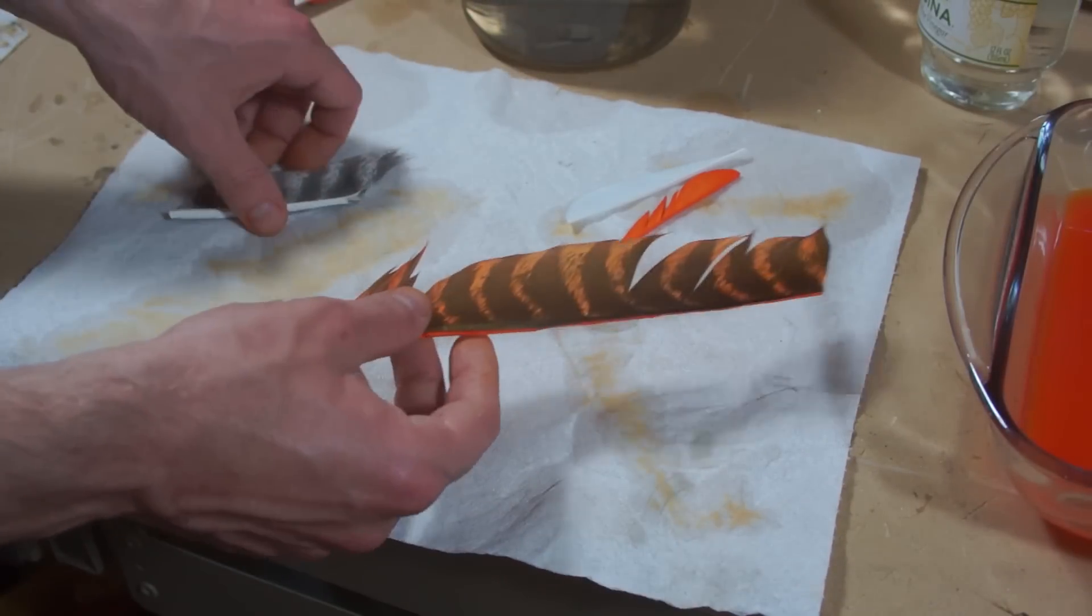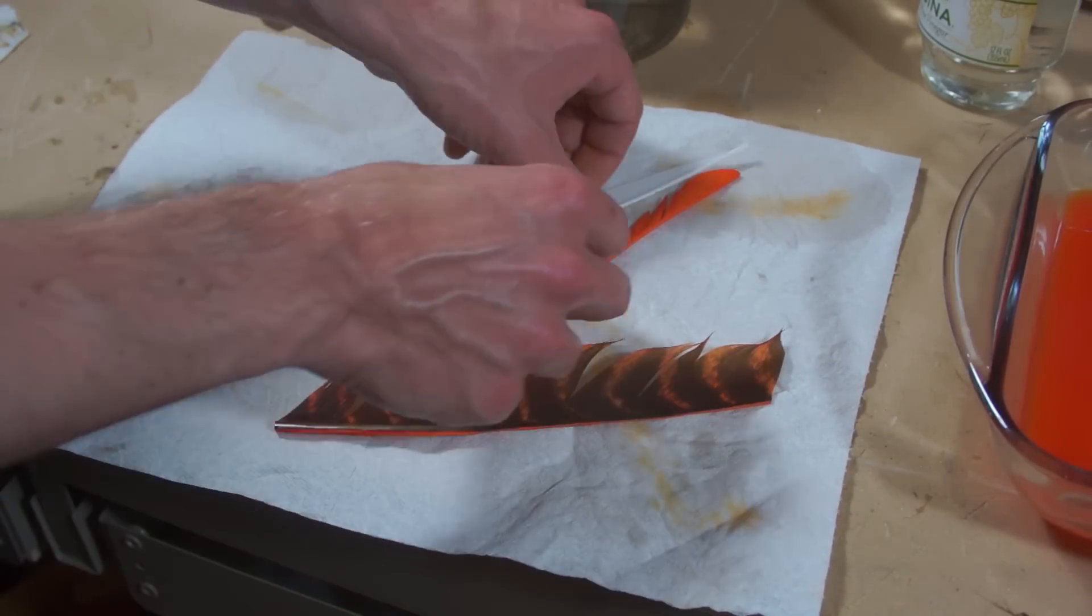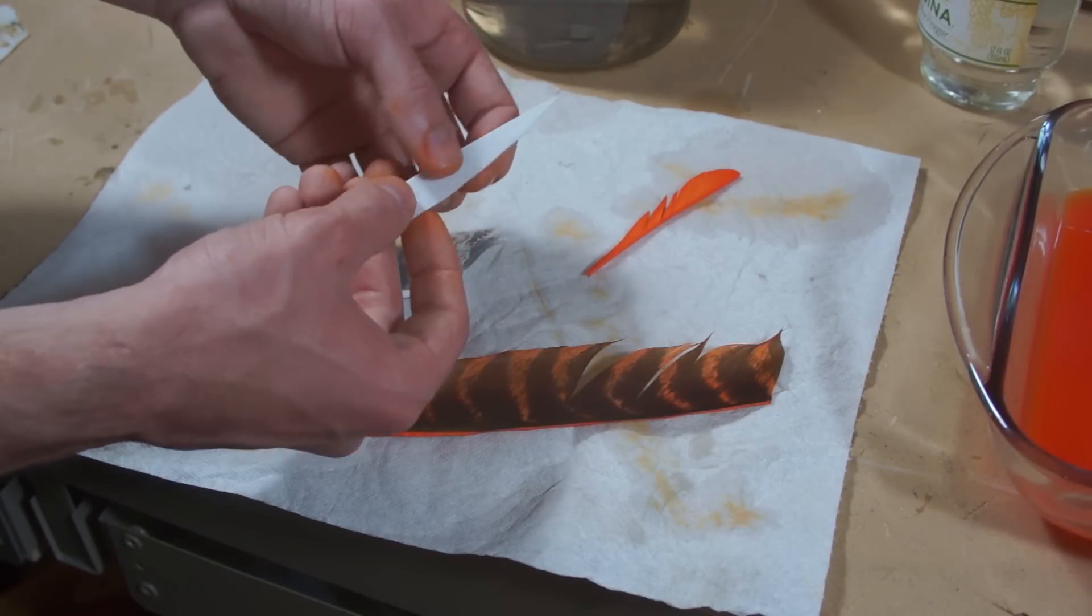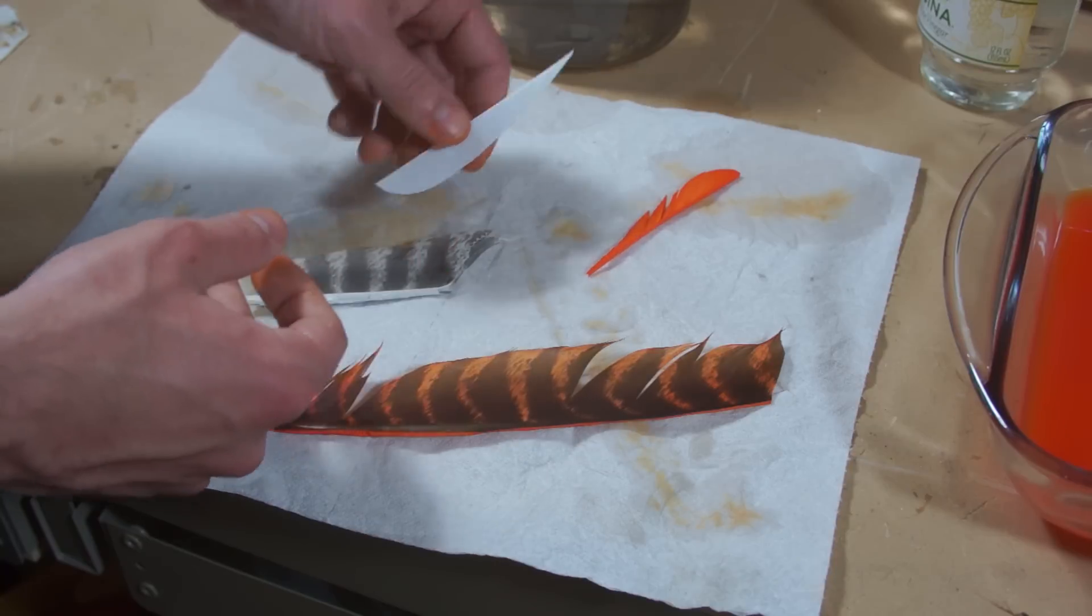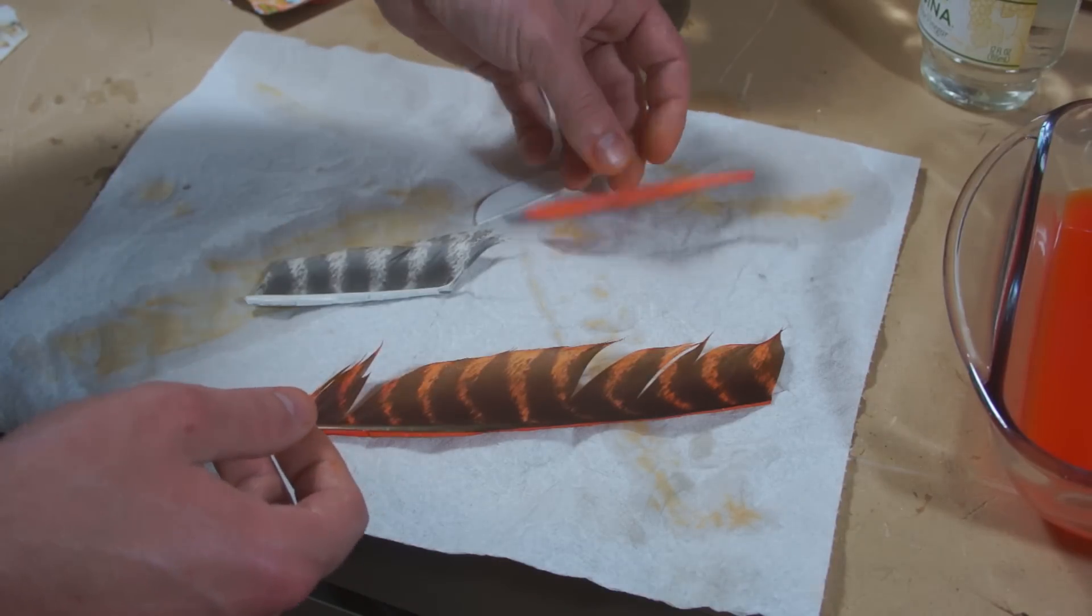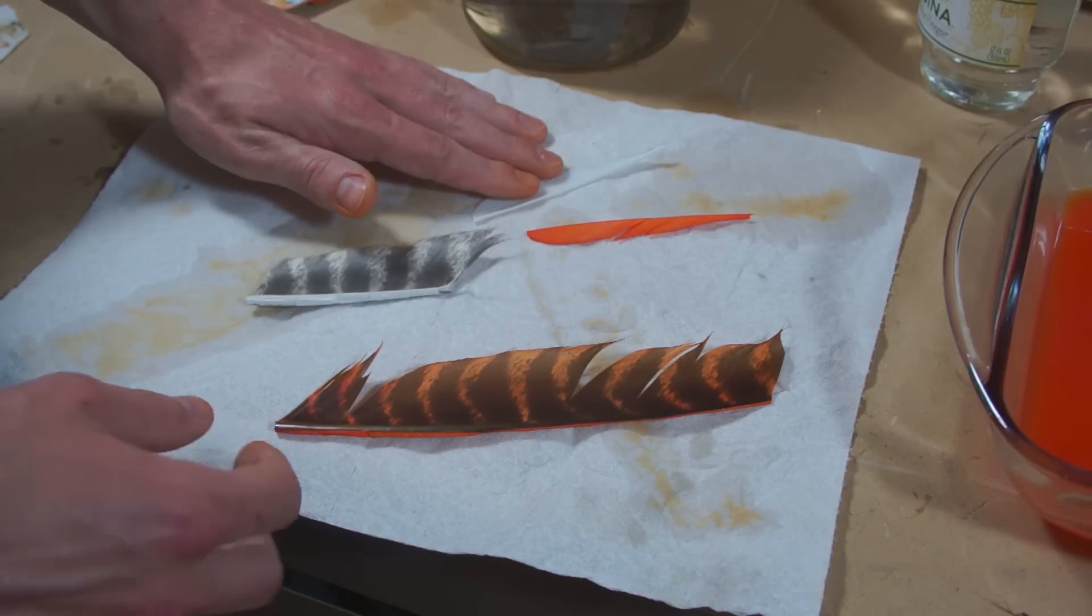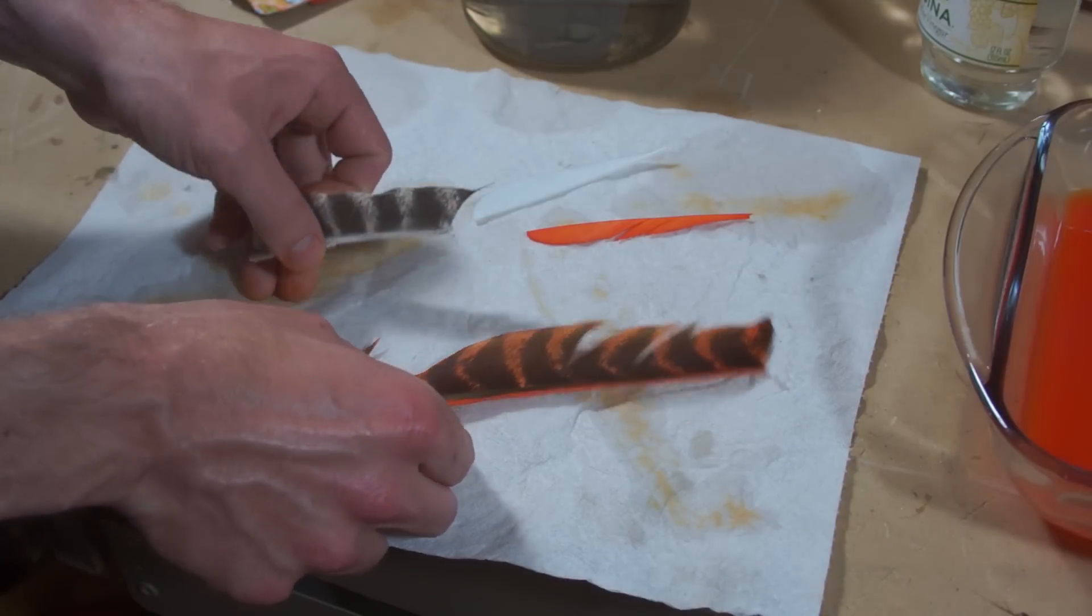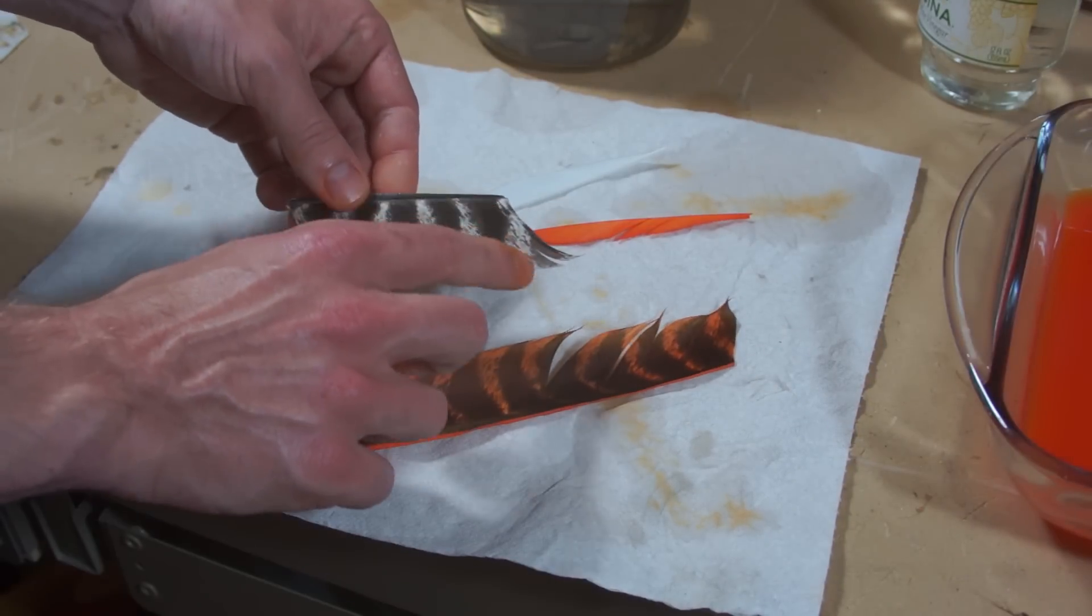I wanted to show you this with both a wild turkey feather and a domesticated white feather. Reason being, you're going to get a really nice dramatic effect with these feathers that start out white. With a wild turkey feather, because you start off with all these naturally dark bars, you're not going to get quite that dramatic effect.